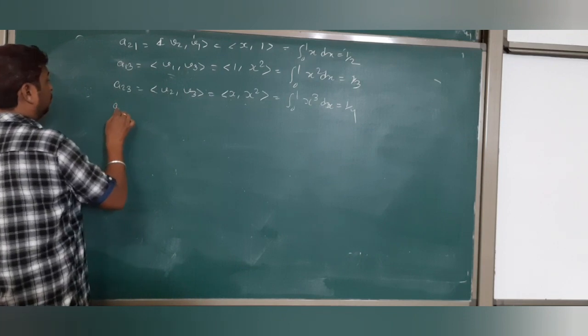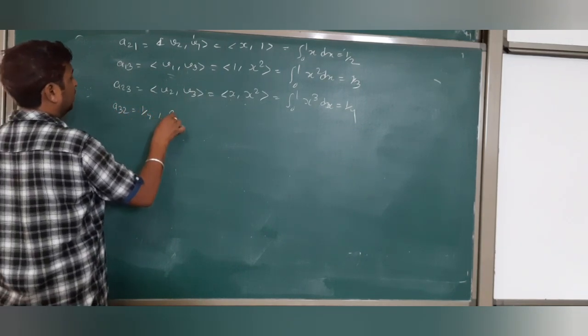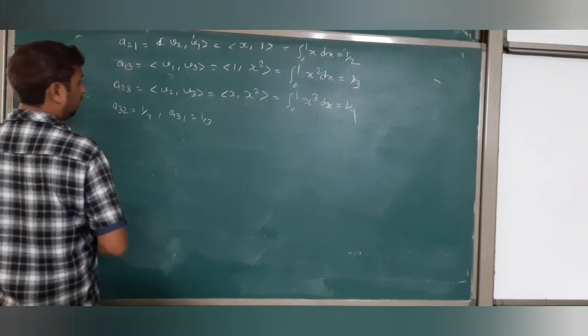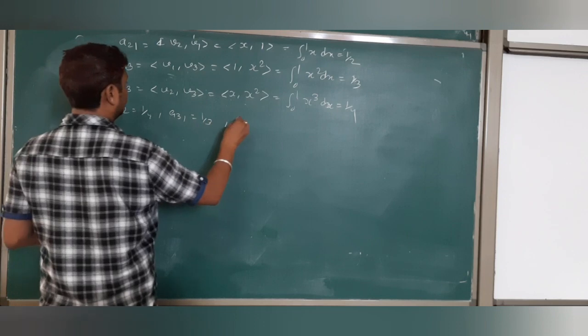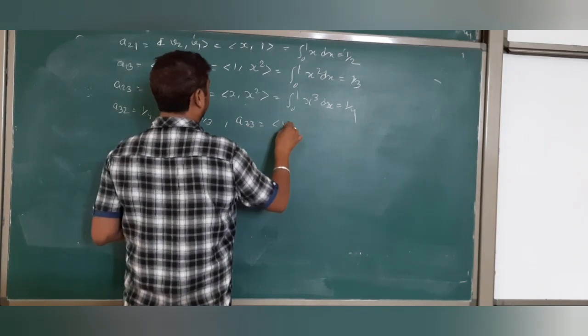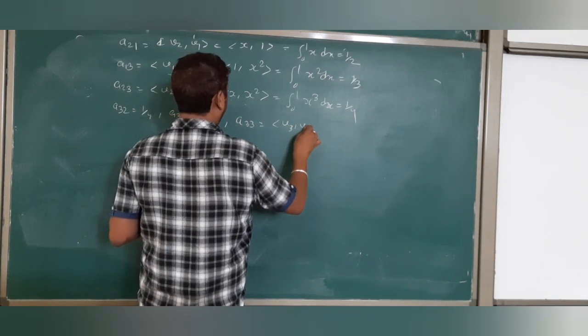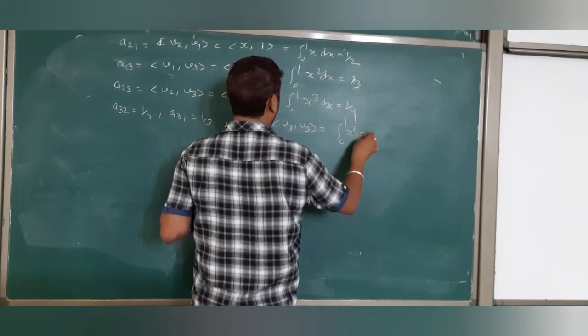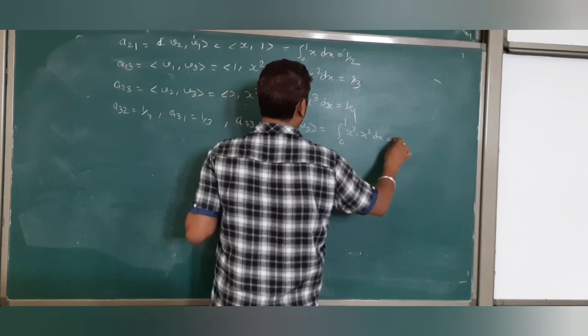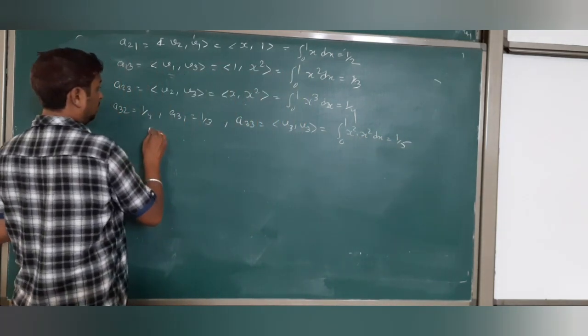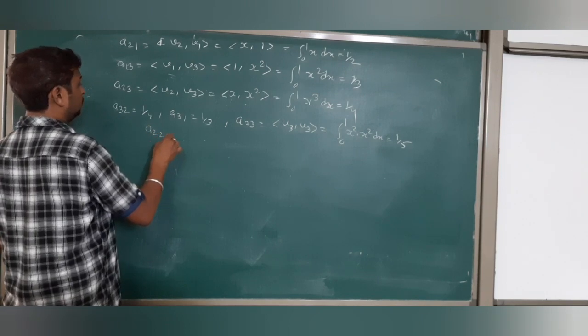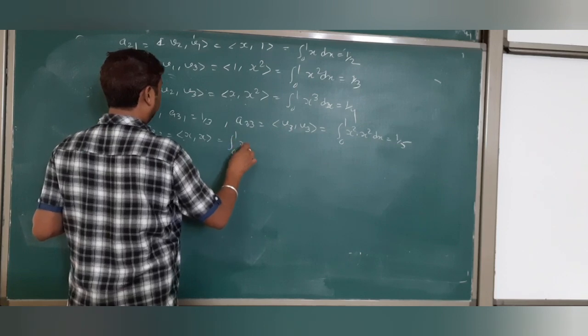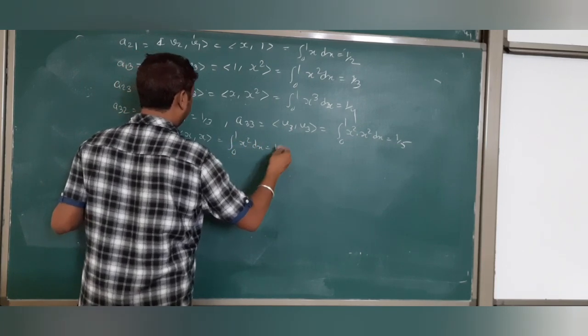What is a₃₁? 1/3. a₃₃ is v₃ with v₃, which is x² with x², giving integral 0 to 1 of x⁴ dx, which equals 1/5. What is a₂₂? x with x gives integral of x² dx, which is 1/3.